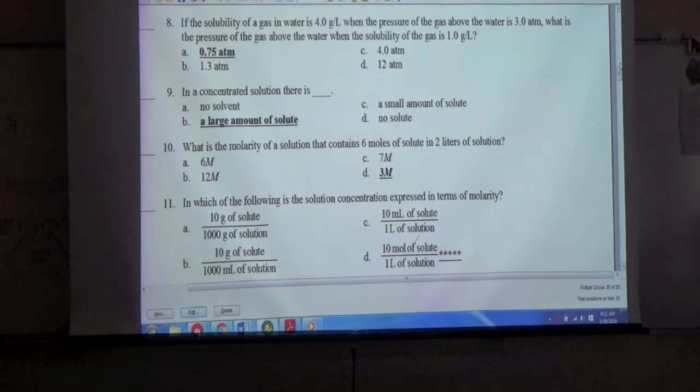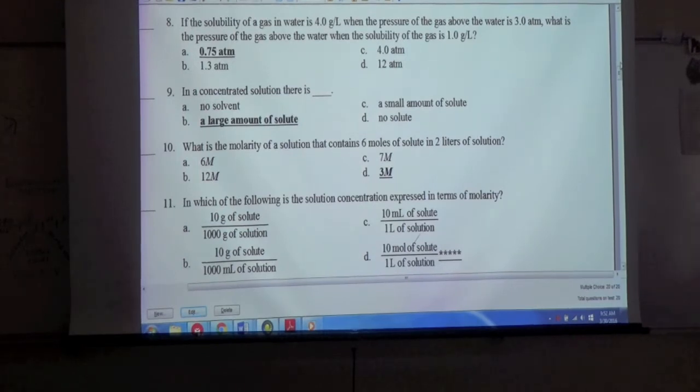If the solubility of a gas in water is 4.0 grams per liter, and the pressure of the gas above the water is 3.0 atm, what is the pressure of the gas above the water when the solubility of the gas is 1.0 grams per liter? A, 0.75 atm.